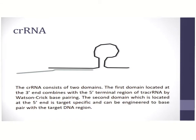The crRNA represents the gene which needs to be engineered or programmed. One component of the crRNA, indicated in the blue oval, needs to bind to the tracrRNA. The second component, indicated in the yellow oval, is the region which binds to the specific section of the genome which needs to be edited.